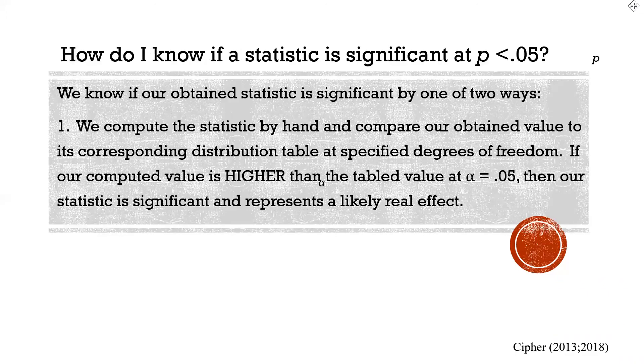So, how do we know if the statistic we compute or the statistic we're reading about in research is significant at p less than 0.05? Well, two ways. Generally, the first way is old school. We compute the statistic by hand and compare the value that we obtained to its corresponding distribution table at certain degrees of freedom.